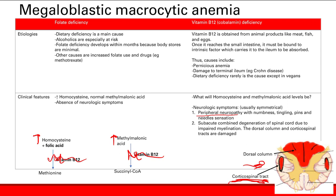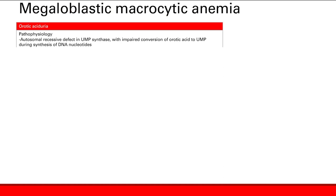That's folate and vitamin B12 deficiencies — the megaloblastic macrocytic anemias, because megaloblastic means you see those hypersegmented neutrophils and megaloblasts, which are the abnormally large, immature red blood cells. Another less common cause of megaloblastic anemia is orotic aciduria.